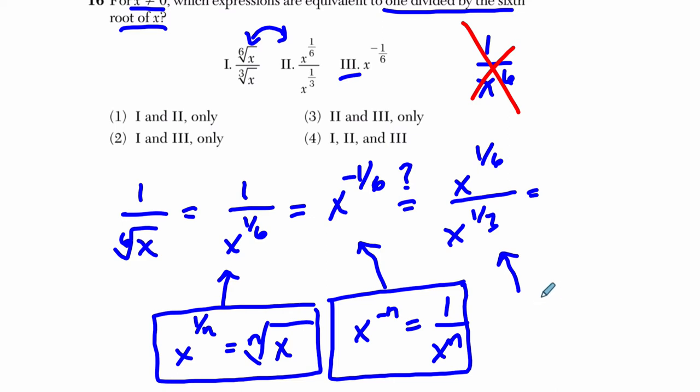If you have x to the a divided by x to the b, this must be equal to x to the a minus b. You subtract the exponents when you're dividing.